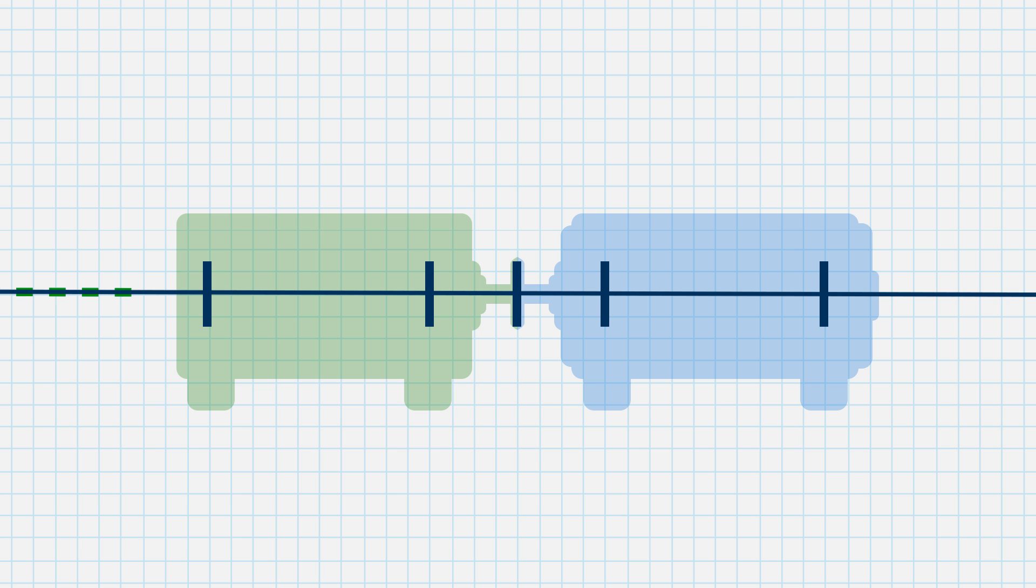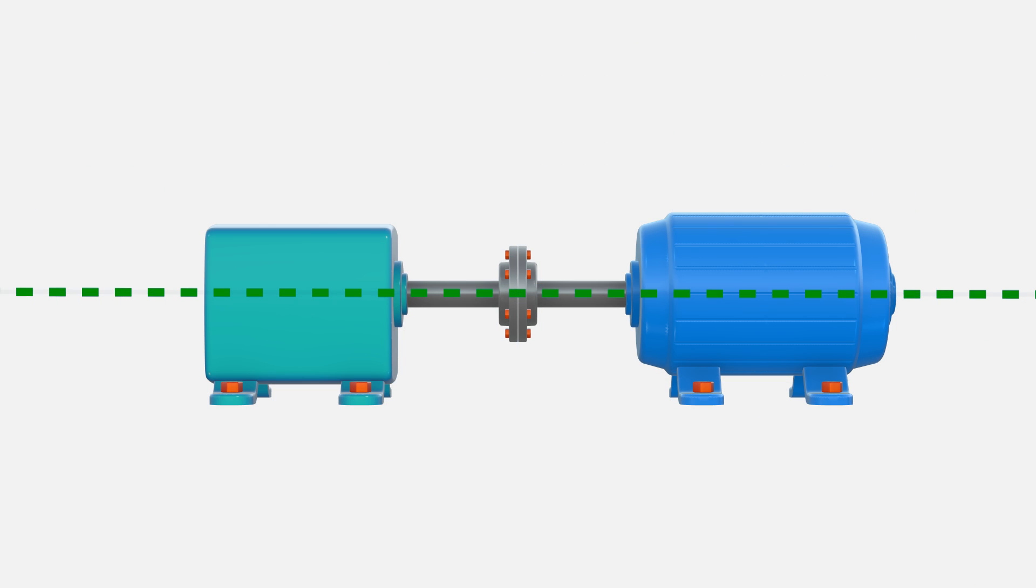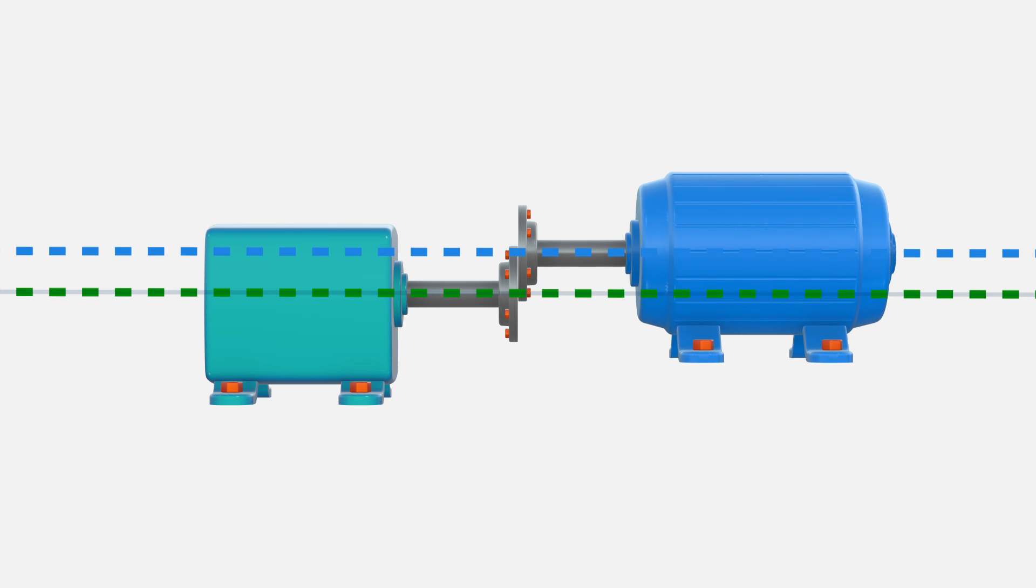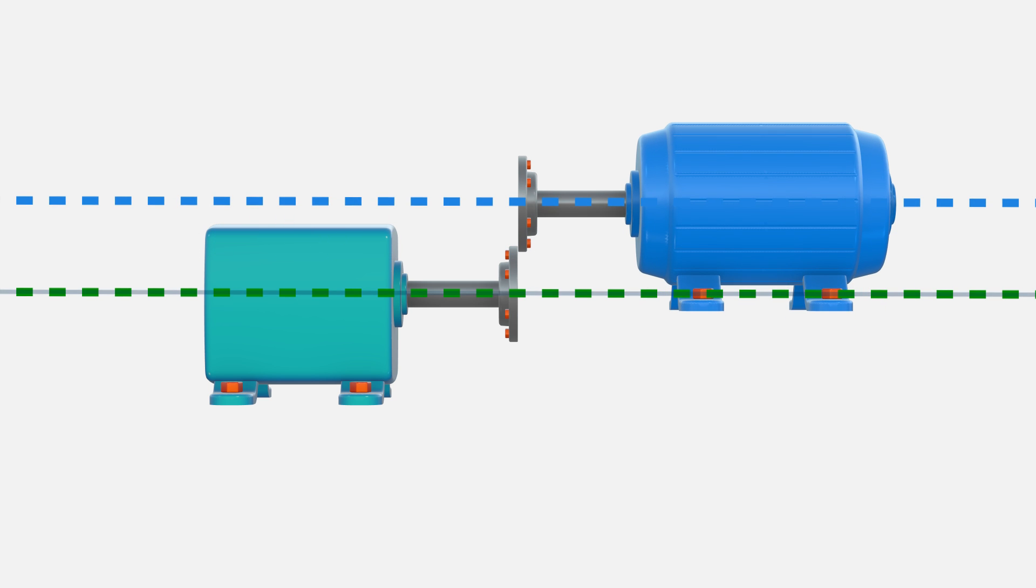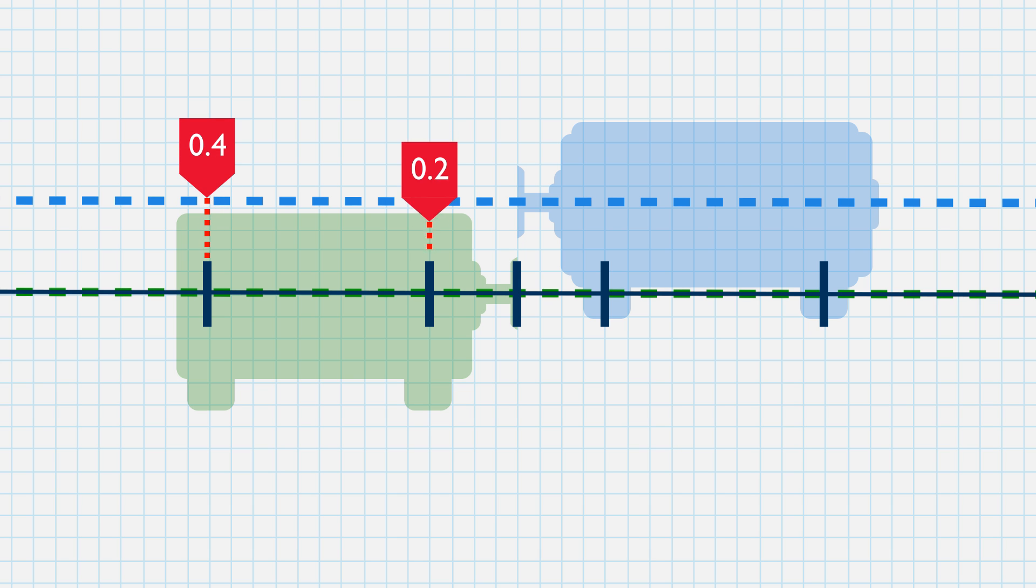Beginning with our shafts in perfect alignment, let's introduce some offset misalignment by raising the front and back feet of the movable machine equally by 0.4 mm. The movable shaft centerline is now offset from the stationary shaft centerline by 0.4 mm at every point along its length.